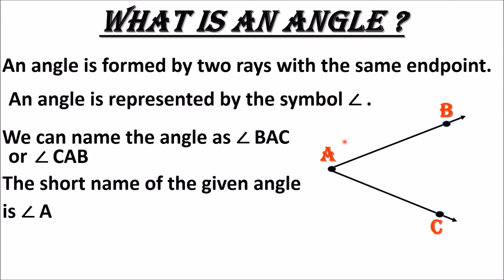When you name the angle, you should see that the letter A should be between the remaining two letters. That is angle B, A, C — or you can say angle C, A, B. And the short name is angle A.